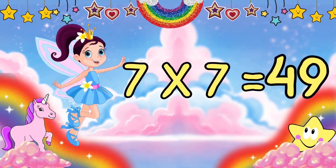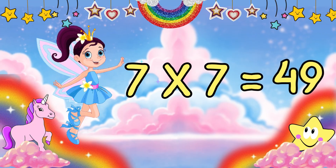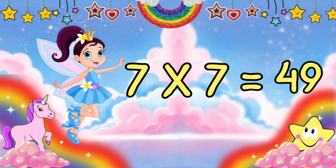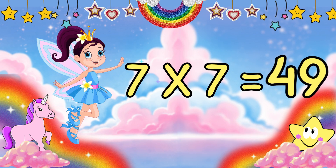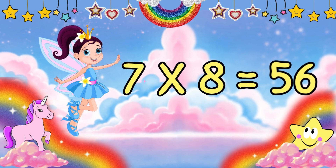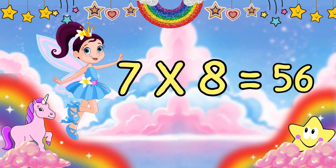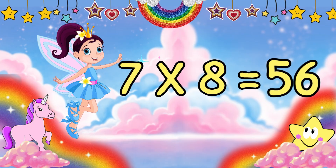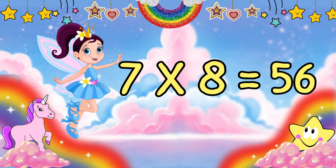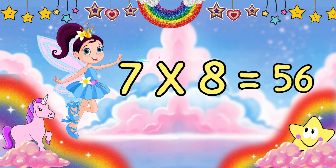7 times 7 is 49. Can you say 49? F-O-R-T-Y, 40, N-I-N-E, 9, 49. Do you know what 7 times 8 is? 7 times 8 is 56. Can you say 56? F-I-F-T-Y, 50, S-I-X, 6, 56.